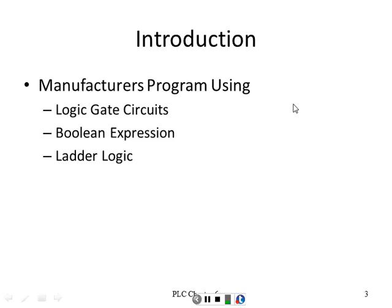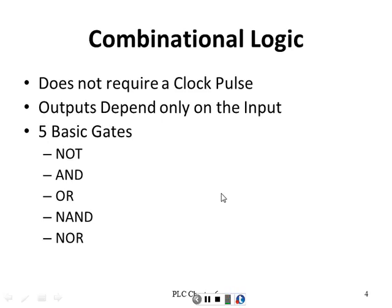There are two basic types of logic gates: combinational and sequential. The combinational is asynchronous, which means it does not require a clock pulse. So when I put something on the input, it shows up on the output — it's not waiting for a clock pulse. The only thing the output is waiting on is a change on the input.